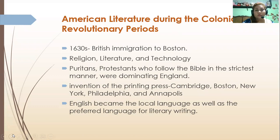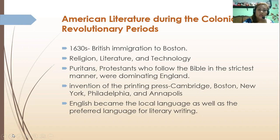The first part we're going to discuss is about the colonial and revolutionary periods. In the 1630s, British immigration went to Boston, and the main subject of literature during that time was about religion, literature, and technology. When the Puritans and Protestants who followed the Bible in the strictest manner were dominating England.